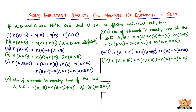That ends the list of results on the number of elements in sets. If you've been wondering what N means everywhere, it is the number of elements present in a set. We need to look into all these important results because we're going to be using them in a lot of word problems based on sets — that's what we'll be doing in the forthcoming videos.